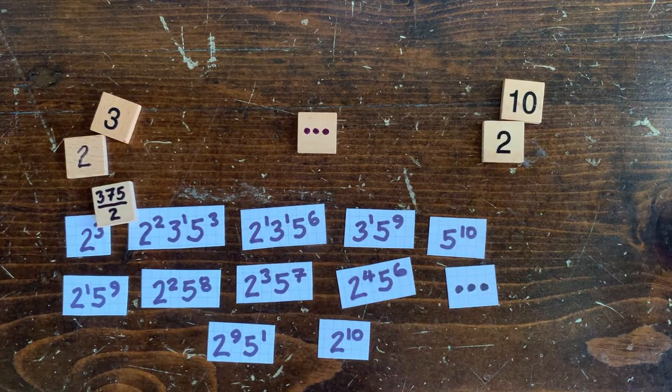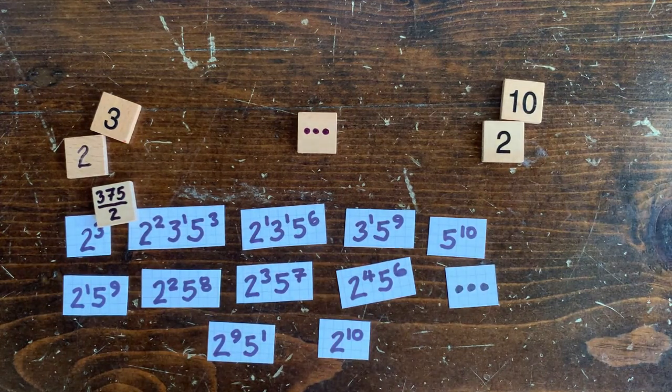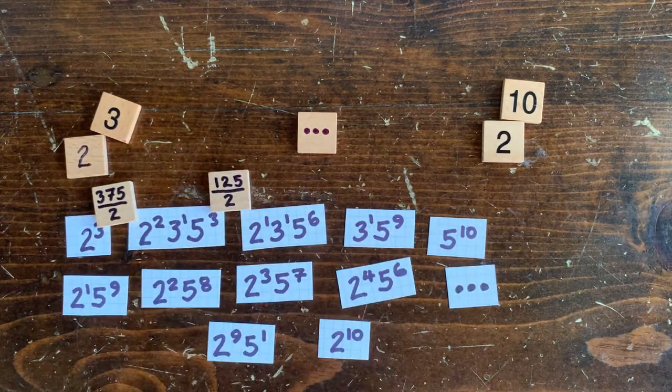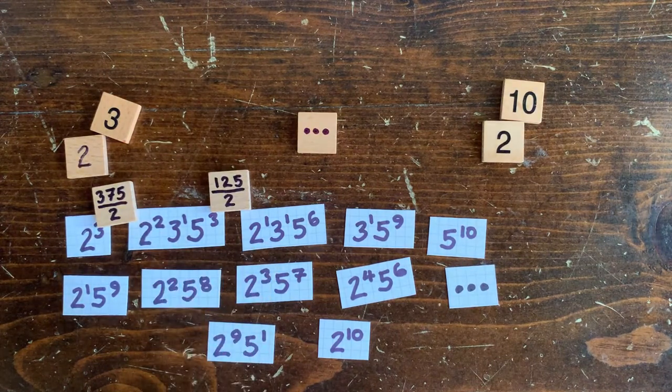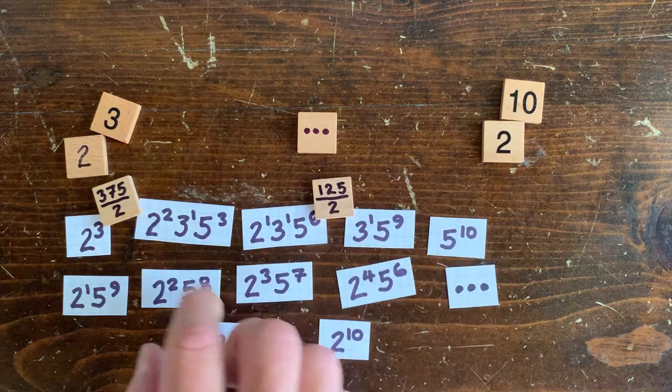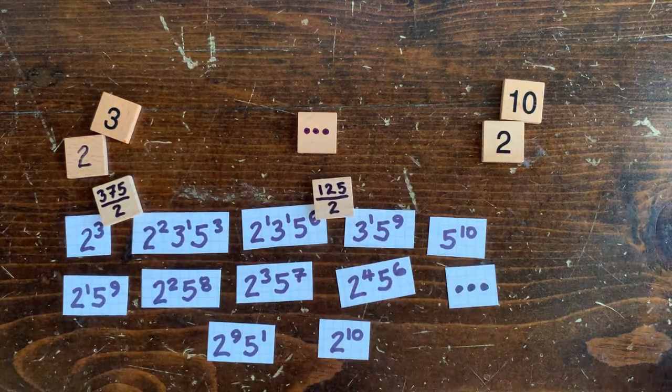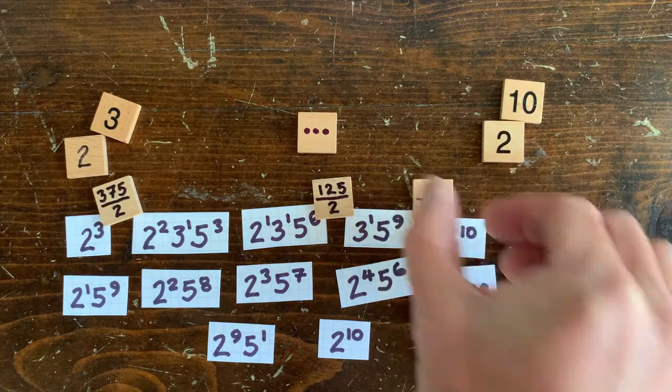If we see a number like 2 to the x, 3 to the y, 5 to the z, we multiply it by 125 over 2. And we do that until we reach a different kind of number here, 3 to the x, 5 to the y, which we multiply by 5 thirds.